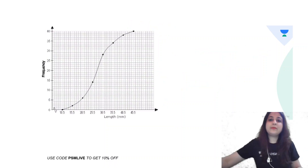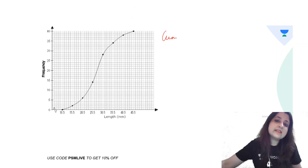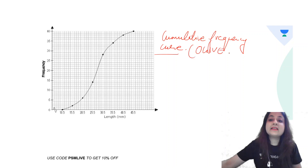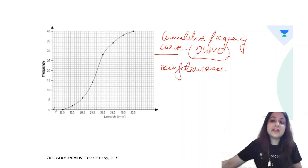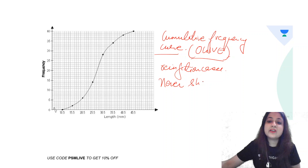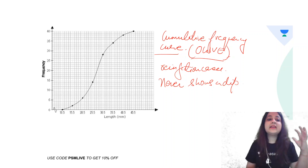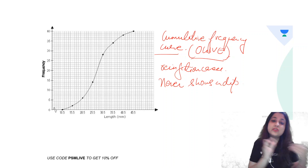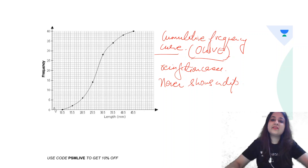So that you don't get confused, here is another picture — a cumulative frequency curve, also known as an Ogive. This is used to represent reinfection cases. The key difference from a line graph is that the cumulative frequency curve will never show a dip, because cases keep adding up. It is always denoted by the Ogive.